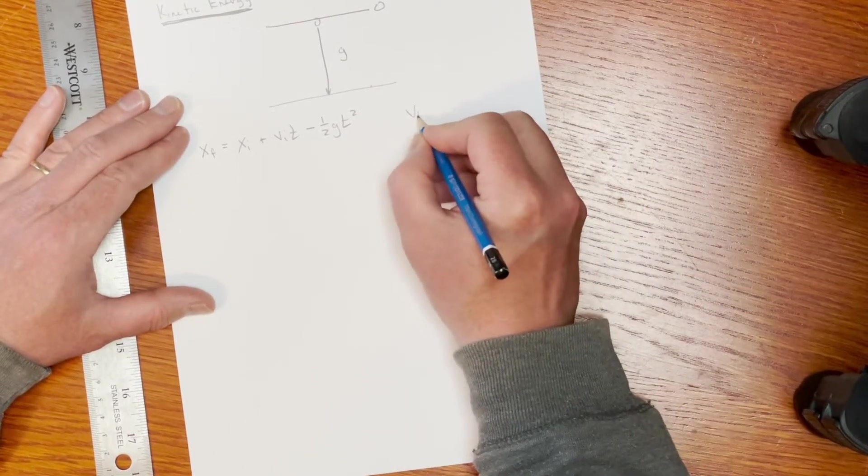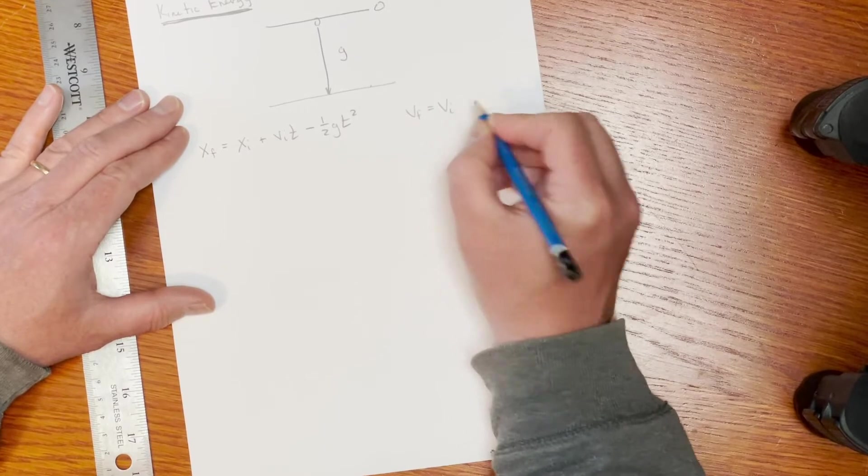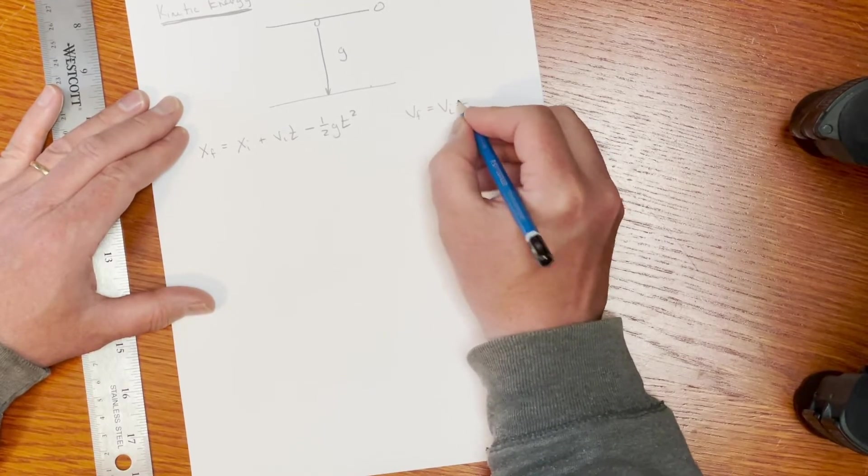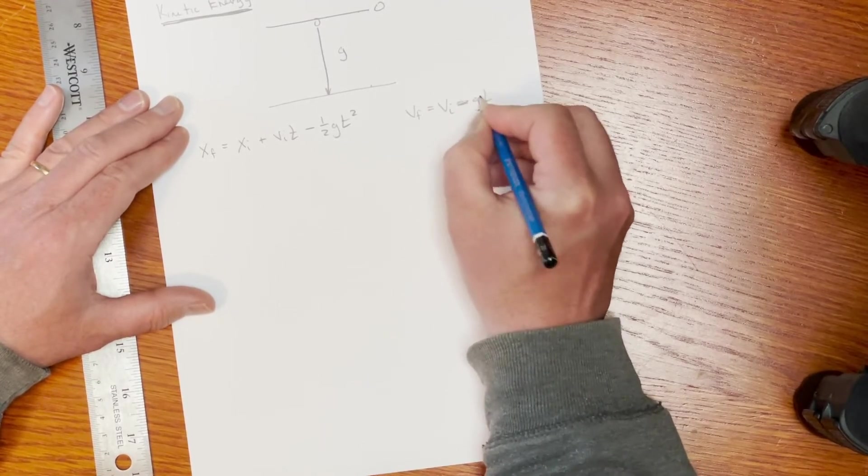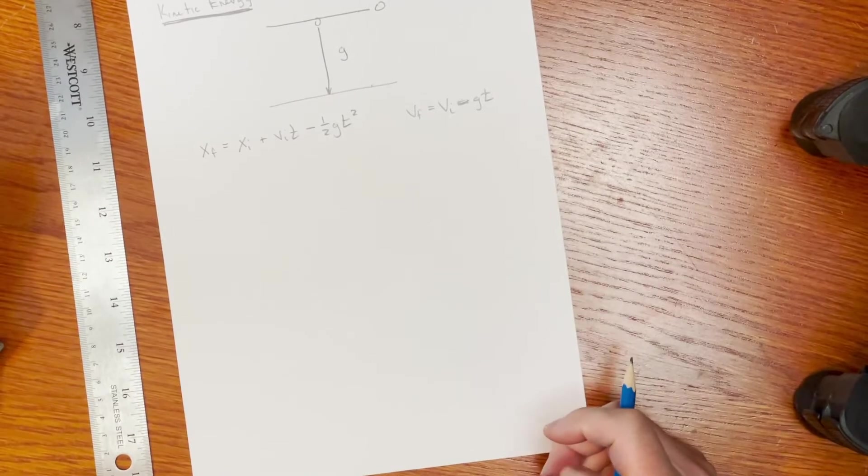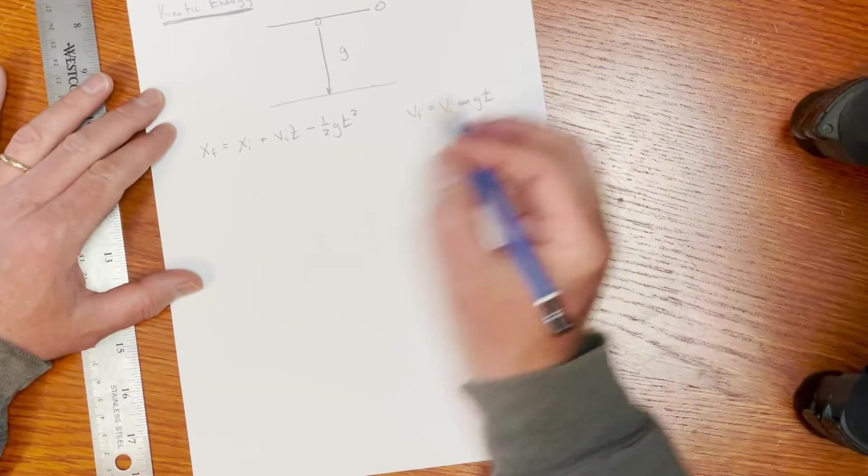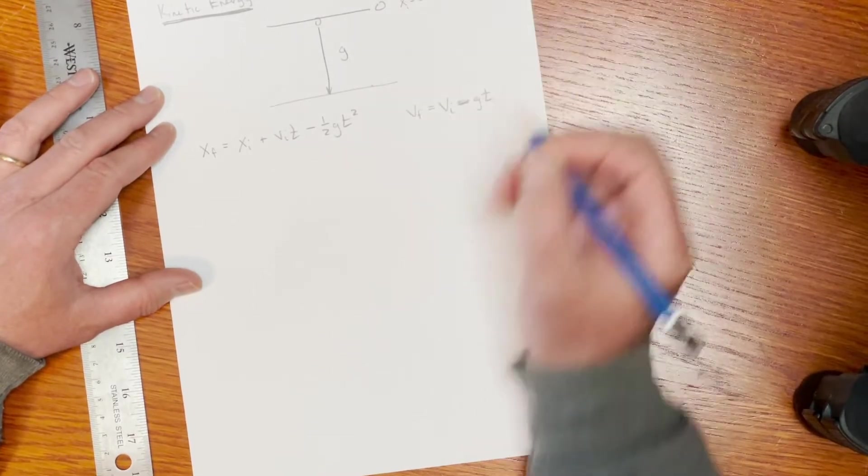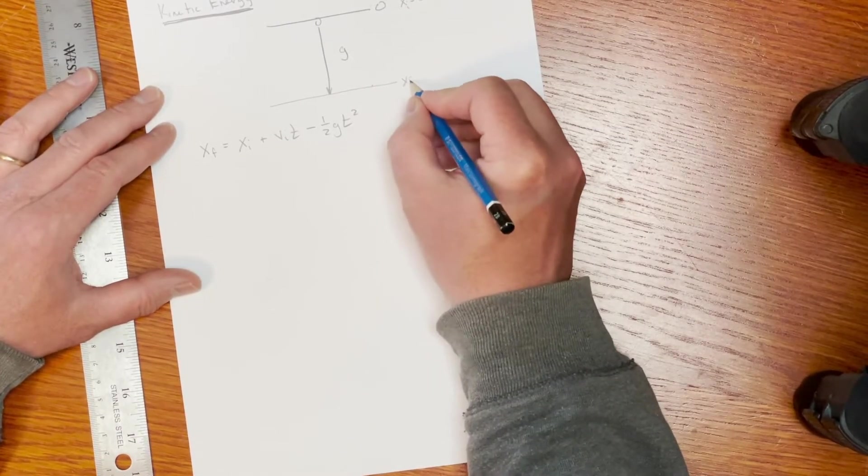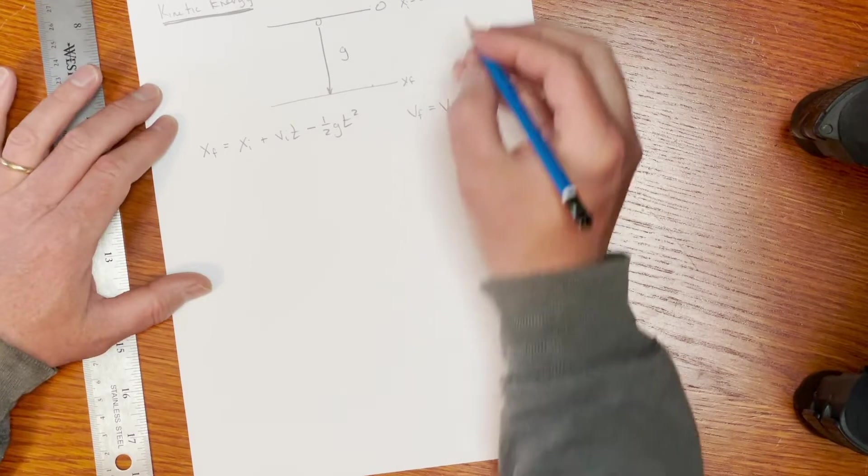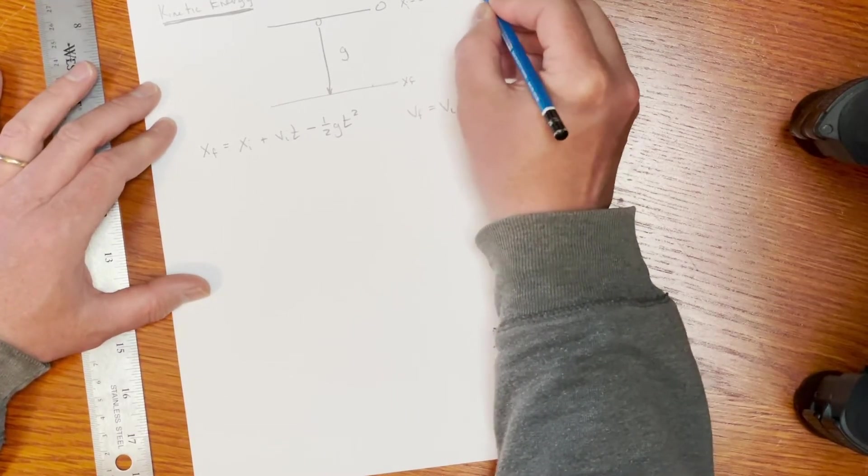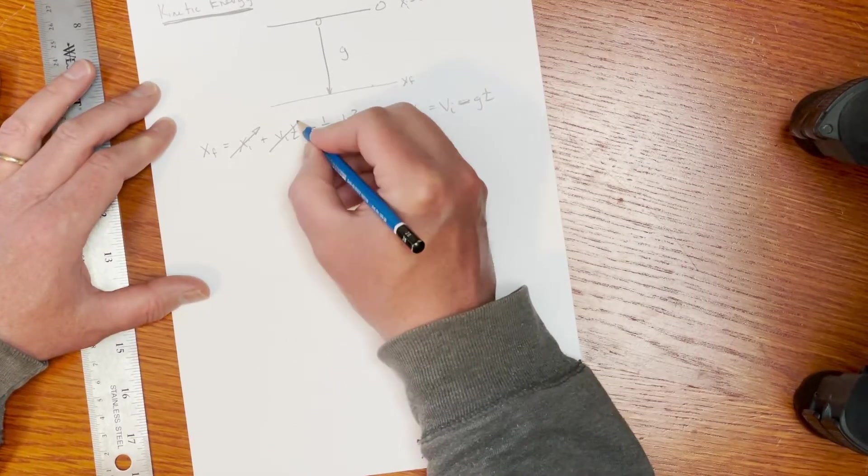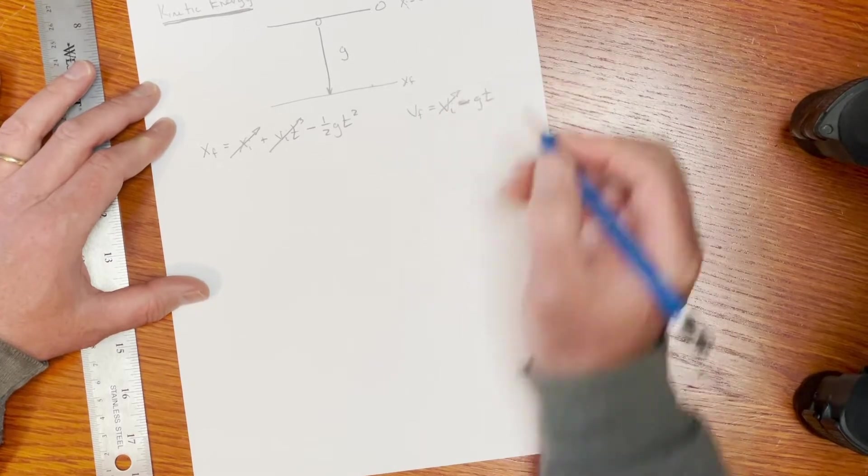And then I also have my equation for my velocity, which says that the initial velocity plus or minus g t is going to be equal to the final velocity. Now in this case, I'm going to start this at x equals zero. And my initial velocity is also going to be zero. So that's going to go away, that's going to go away, and that's going to go away.